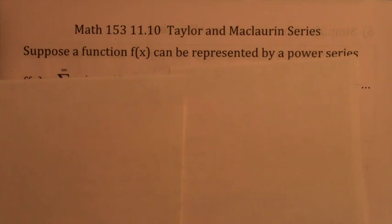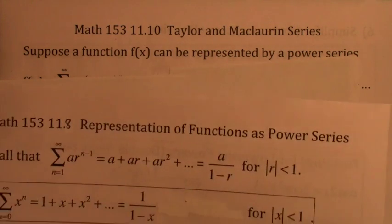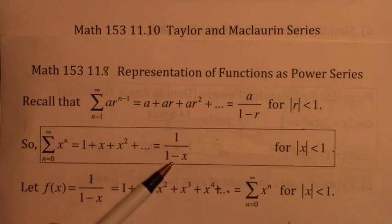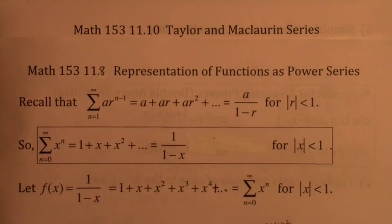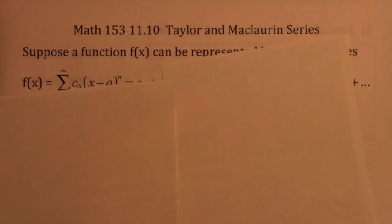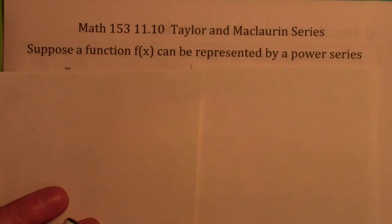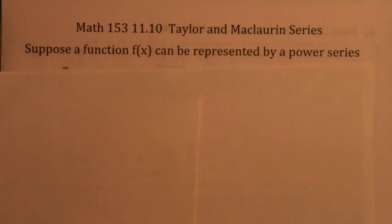Remember the function 1 over 1 minus x is the sum of all the x^n's? Remember this one? If you have a function that can be written in this form, then you can find a power series for it, like we did in section 11.8. But in general, it's a hard question. How do you find power series for functions that aren't necessarily in the form of the geometric power series?